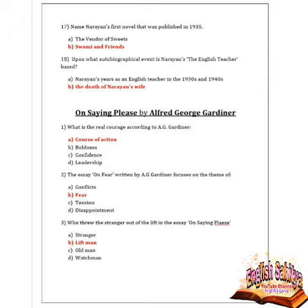Next question: what does the essay On Fear written by AG Gardiner focus on? Options are conflicts, fear, tension, and disappointment. Option B is correct — fear. Next question: who threw the stranger out of the lift in this essay On Saying Please? Options are stranger, lift man, old man, and watchman. Option B is correct — the lift man threw the stranger out of the lift.